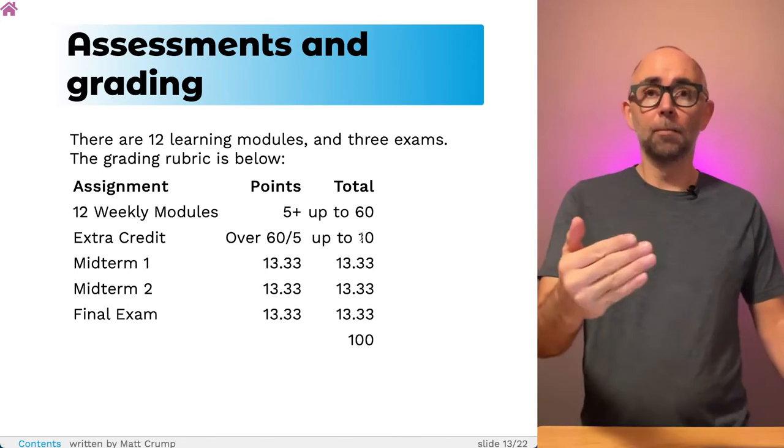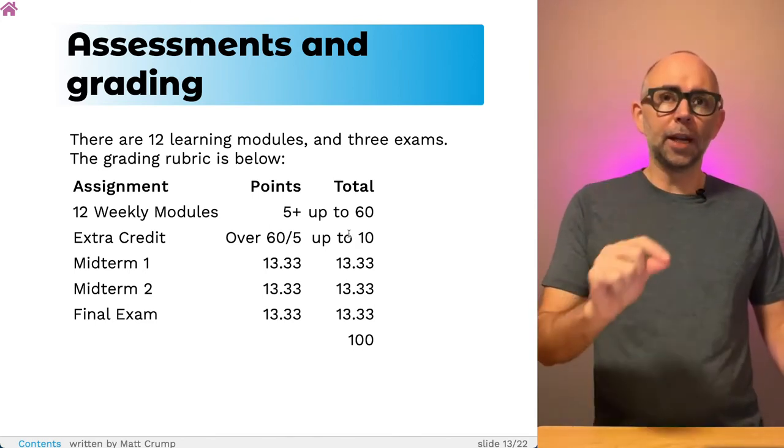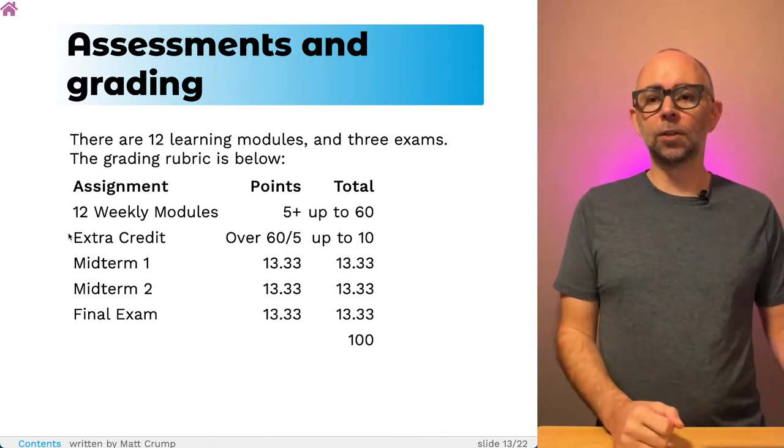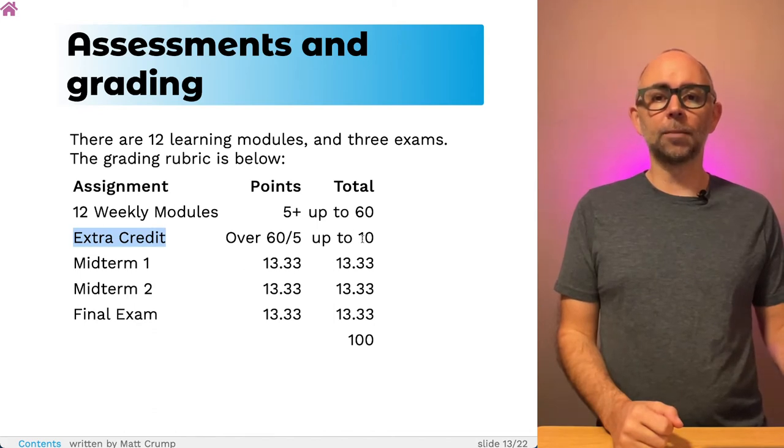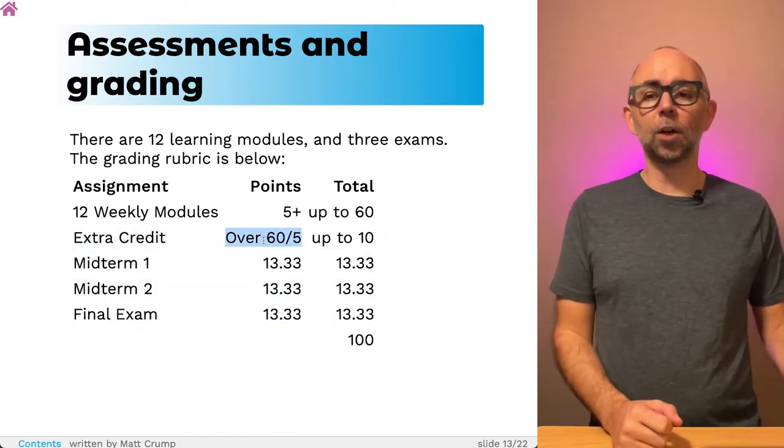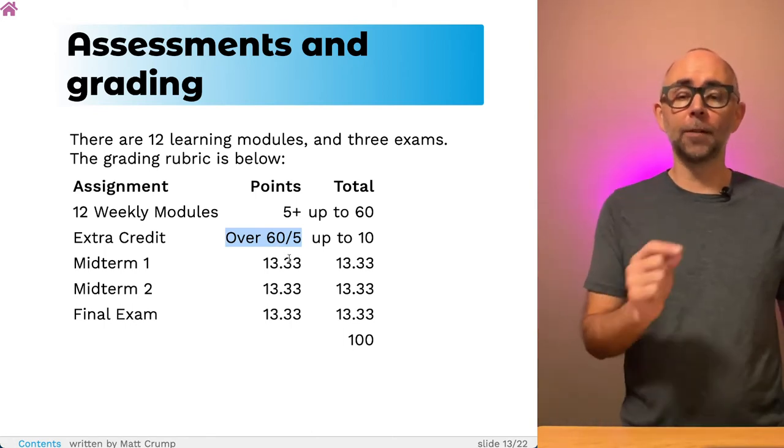You will see that there's assignment choice and flexibility in this course. So you can get way more than 60 points if you want to do more than the minimum number of assignments. If you do more than the minimum, the extra points you get will turn into extra credit. You can get up to 10 extra credit points, and there's a formula. You divide anything over 60 by 5, so it's a 5 to 1 ratio.